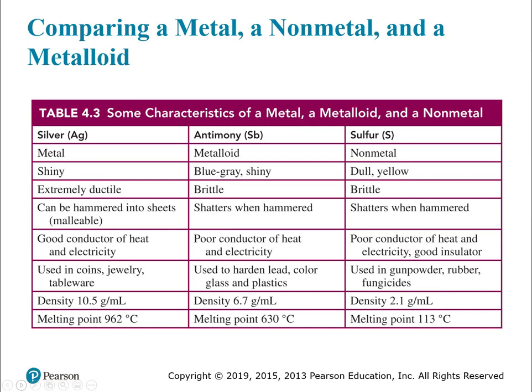This table compares specific examples of a metal, metalloid, and a non-metal. It gives you descriptions about what each looks like — is it malleable, is it a good conductor, what are the melting points — and that will help put into context what we're talking about with the generic characteristics of metals, non-metals, and metalloids.